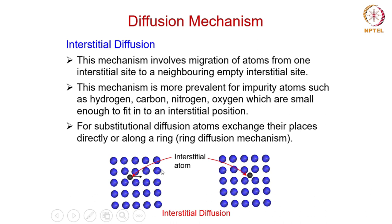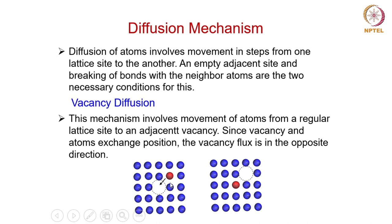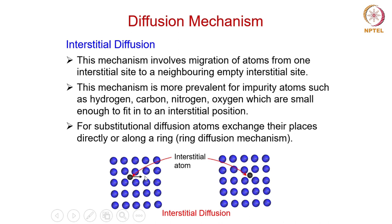In interstitial diffusion, no defect is involved — unlike the vacancy case where a vacancy defect was required. The atom simply moves from one position to the neighboring position. If this has to happen for a substitutional site — that means from one regular site to another regular site — then for that kind of substitutional diffusion, atoms have to exchange their places directly.